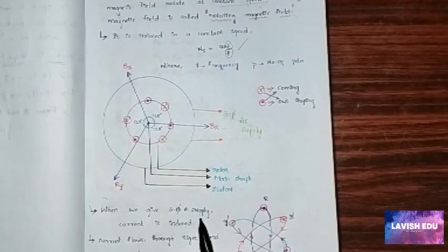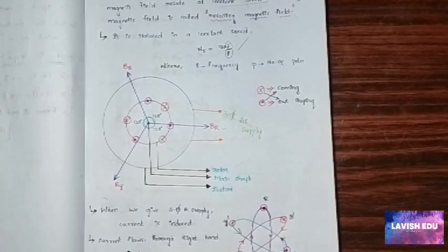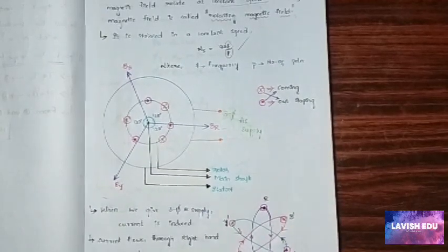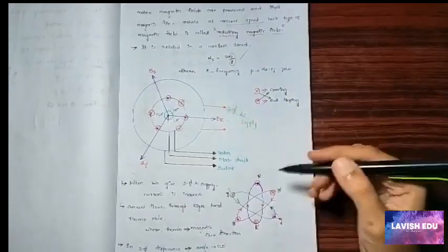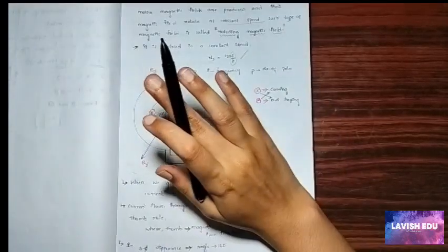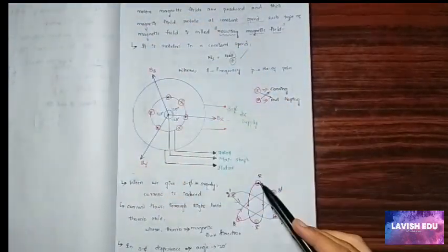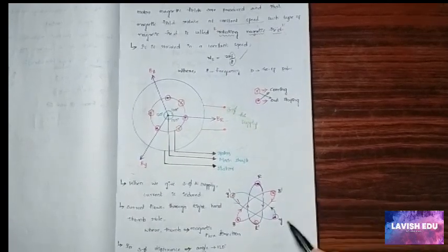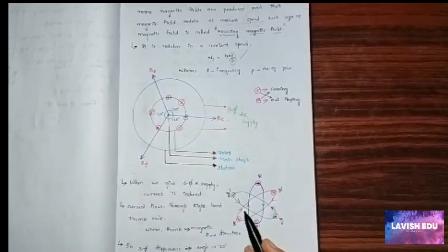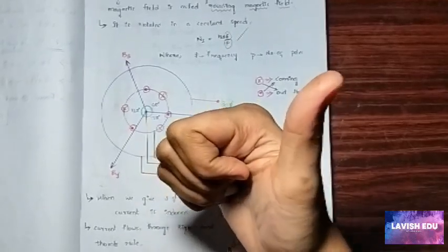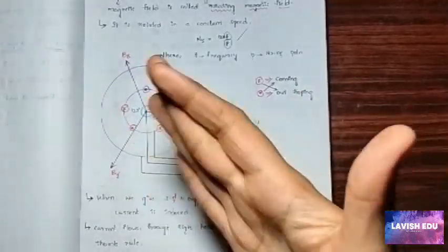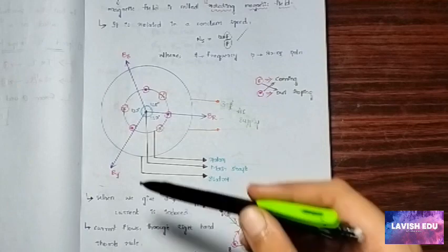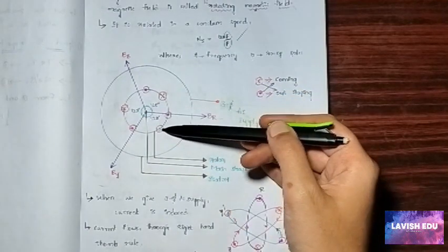When we do three-phase AC supply, current is induced and current flows through right-hand thumb rule where thumb is the magnetic flux direction and three-phase difference is an angle of 120 degrees. I have shown you here that the current flux will move in this direction. By using Fleming's right-hand rule, thumb indicates the magnetic flux direction whereas the fingers indicate the flowing current. What is the angle between each flux? 120 degrees.